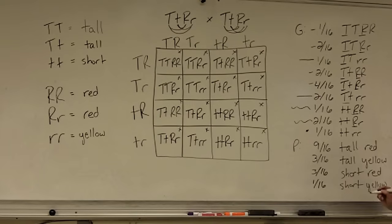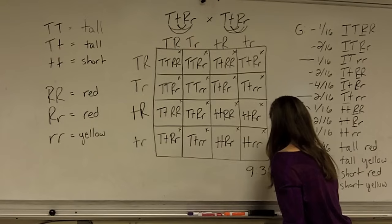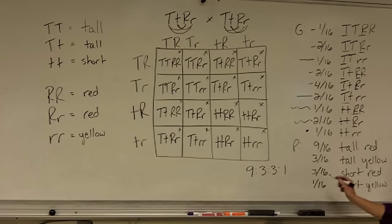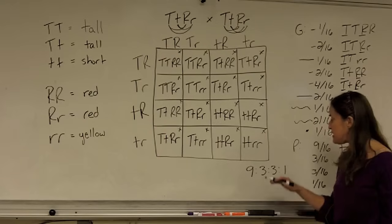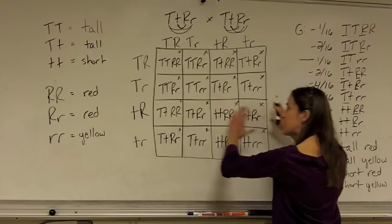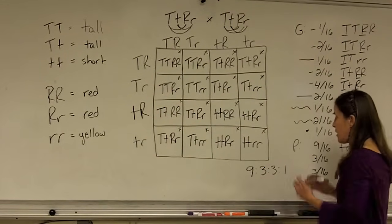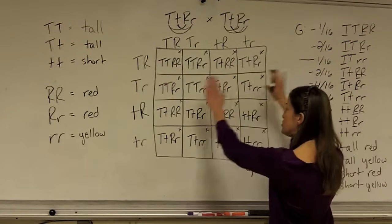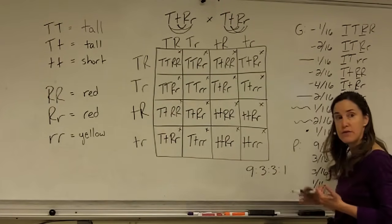What you can see from this is a ratio of nine to three to three to one. Mendel determined this ratio mathematically. Without knowing anything about genes and DNA, he determined that if these genes were assorting independently, if the Ts didn't affect the Rs, that you would get a mathematical proportion of nine to three to three to one in the offspring. And in fact, that is how it works. The genes do assort independently. We do get approximate probability of offspring of nine to three to three to one. And that's how you solve a dihybrid cross.